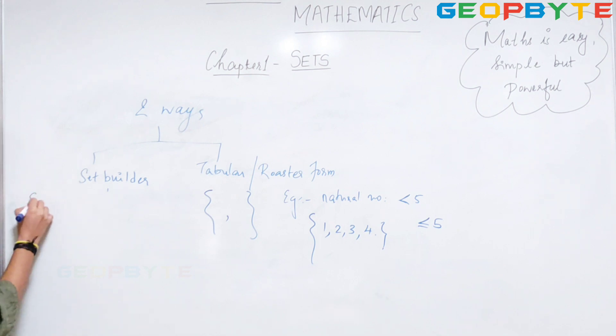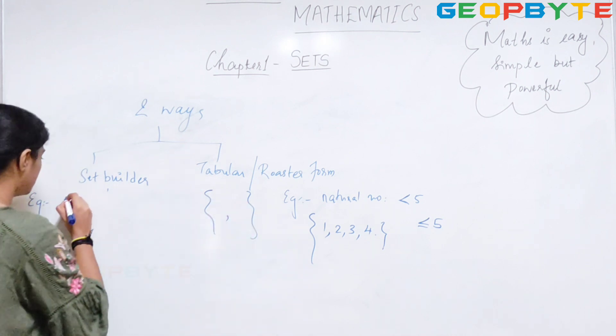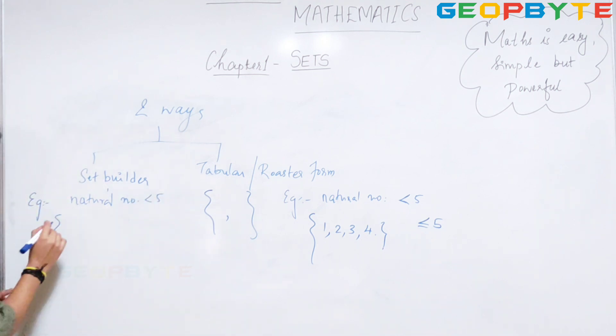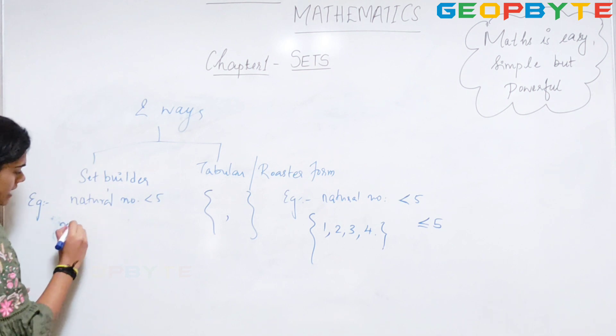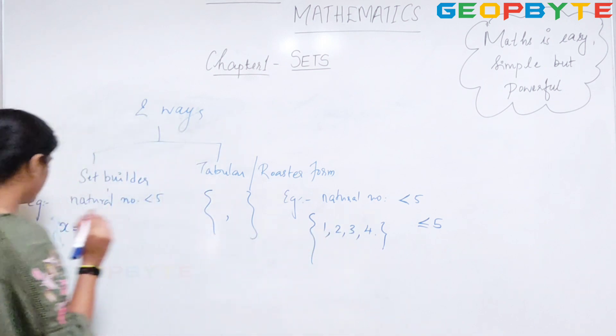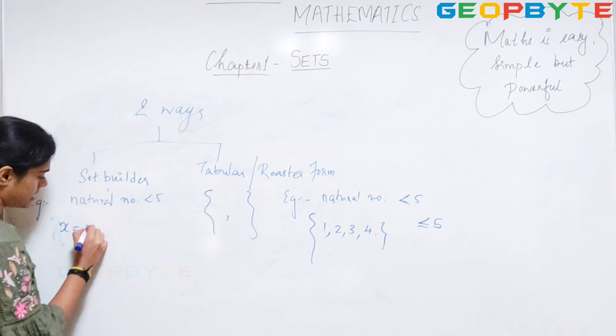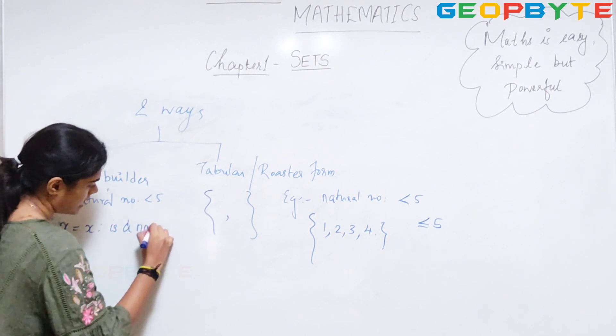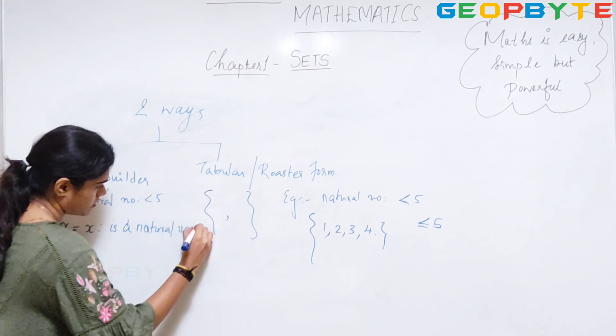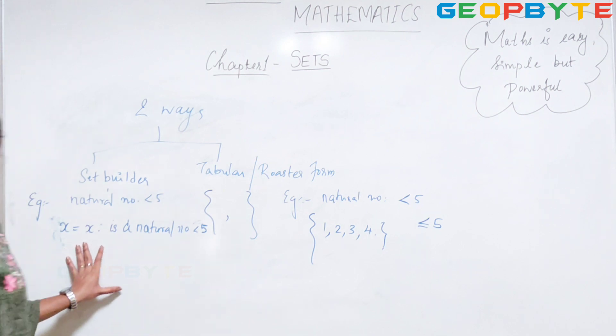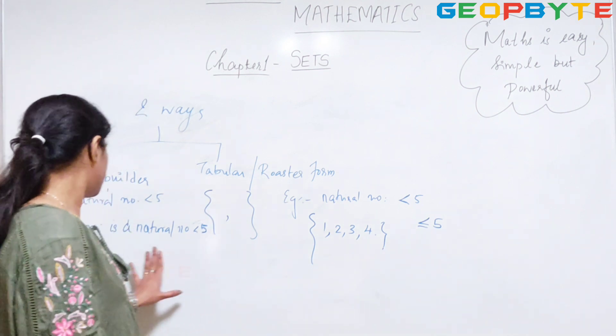When I come to set builder form, if I take the same example, natural numbers less than 5, I can write it as x which is an element, which can take the value 1, 2, 3, and 4. In this case, x is a natural number less than 5. Here the x varies and I can represent it like this.